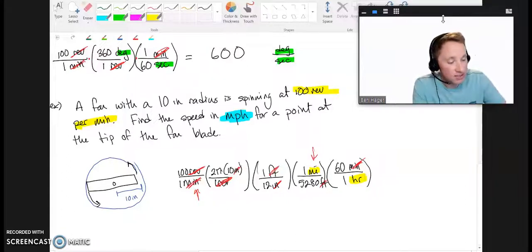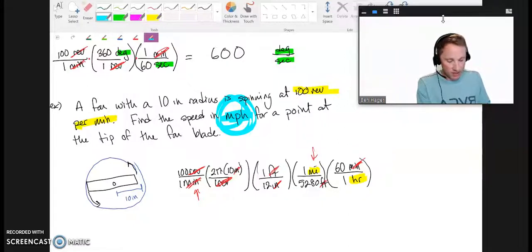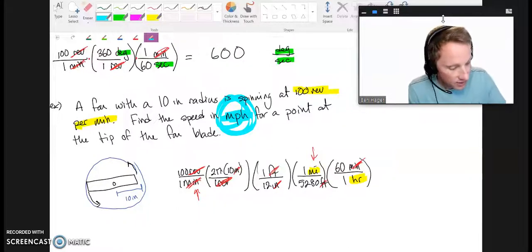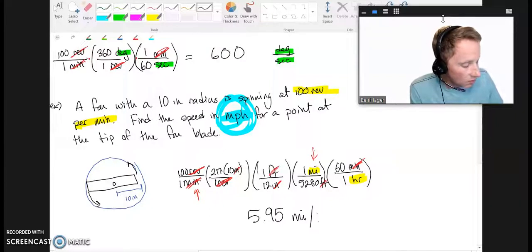Now let's quickly get our answer. Being very careful when we type all this stuff in, to use parentheses in the denominator as needed. And if I did this all correctly, I'm getting that a point at the tip of the fan blade is moving at 5.95 miles per hour.